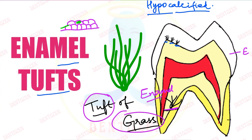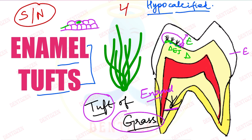So today's video topic is enamel tufts. Where are they starting from? If we look at the picture, this is enamel, this is dentine, and they are arising from the junction between the two — that is, at the dentino-enamel junction. And where are they going? They are going into enamel. But they are not covering the entire thickness of enamel; they are just lying within the inner enamel. So let's know more about enamel tufts, because it can come as a short note or as part of a long question when you are asked about the hypocalcified structures of enamel.